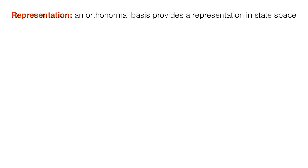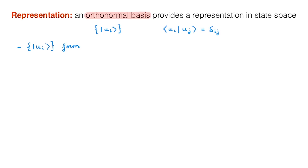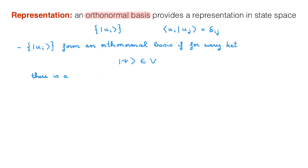Representations in quantum mechanics are a fundamental tool because they allow us to go from the abstract ideas of state space to the concrete mathematics that allows us to solve actual quantum mechanical problems. In state space, we define a representation through an orthonormal basis that spans the full space. This means that the first question we need to ask is: what is a basis? To answer this question, we start by choosing a set of kets |u_i⟩ which are orthonormal. What this means is that the bracket ⟨u_i|u_j⟩ is δ_ij. Then the set of kets u forms an orthonormal basis if for every ket |ψ⟩ that belongs to the state space V there is a unique expansion |ψ⟩ = Σ_i c_i |u_i⟩.